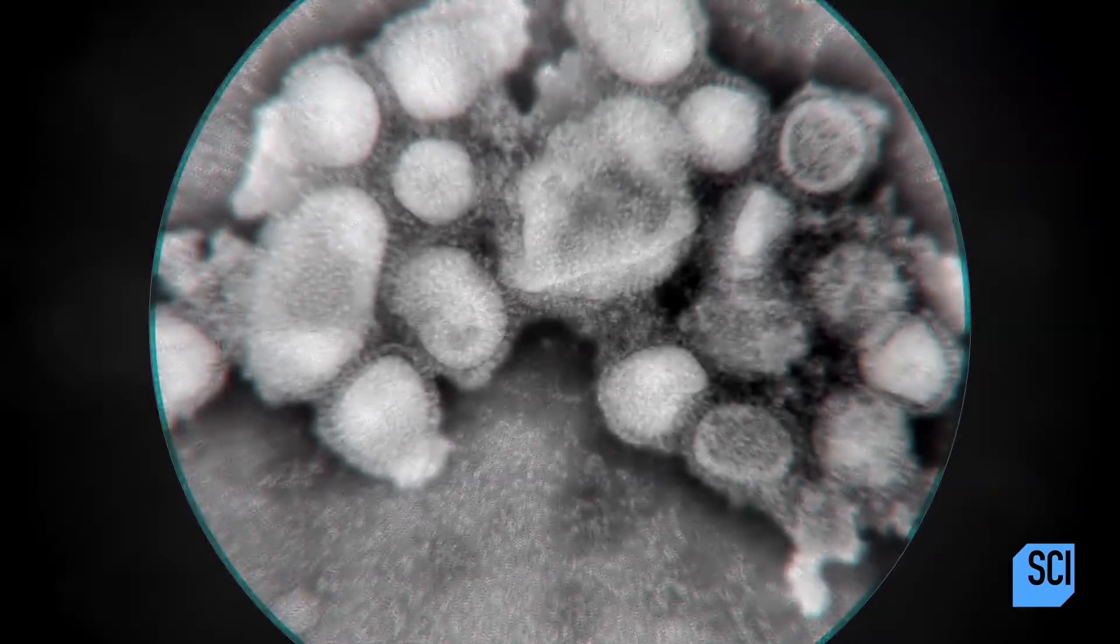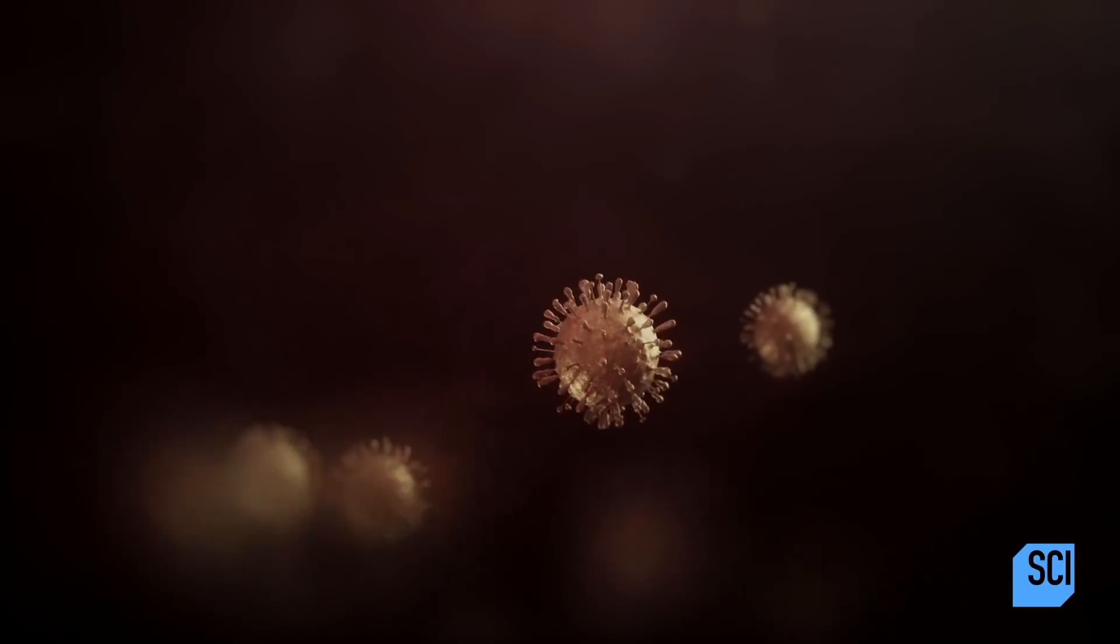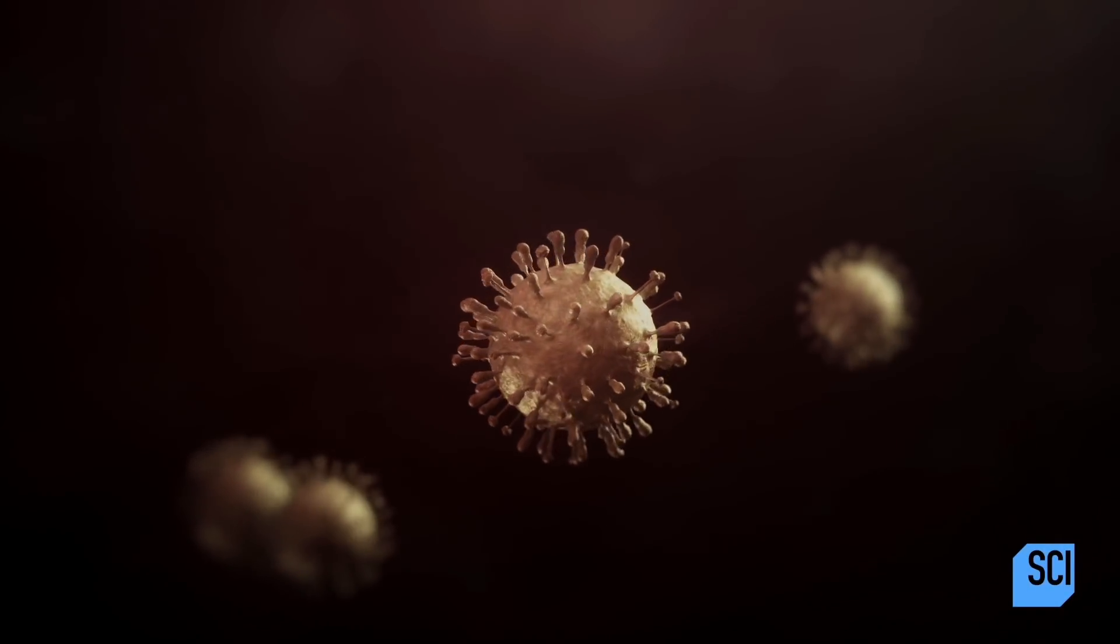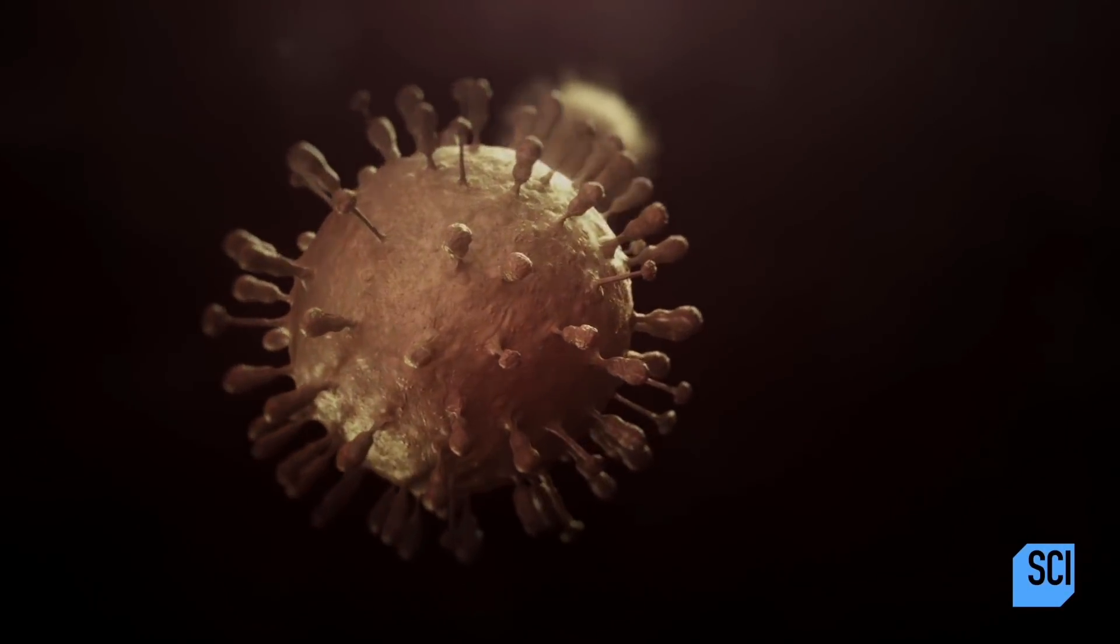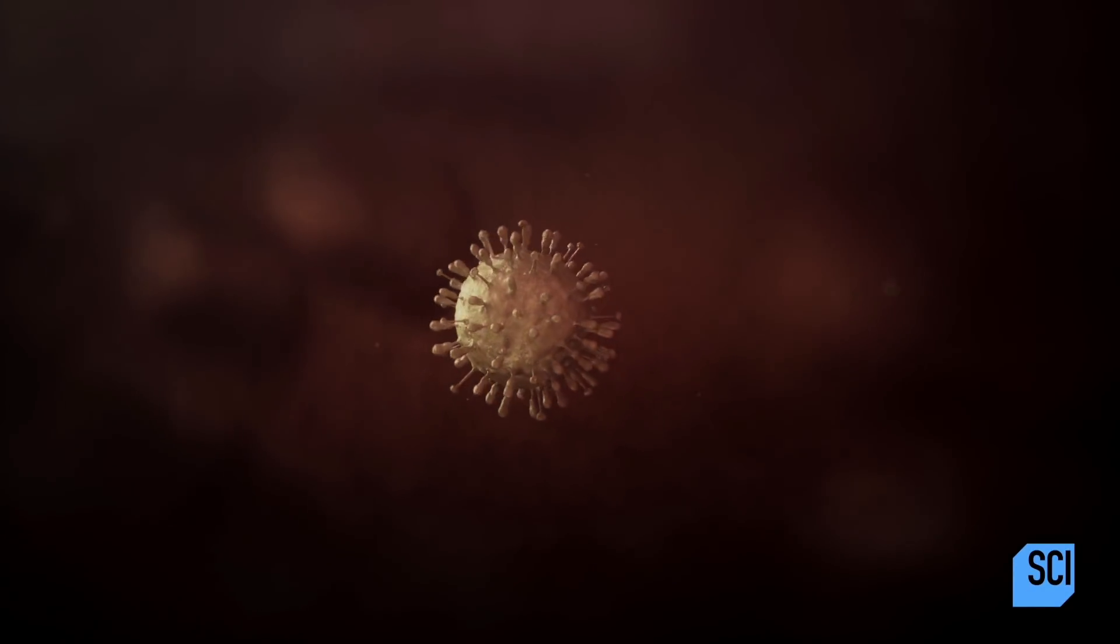Influenza is a microscopic little package that looks kind of like a ball. The virus has two major surface proteins that stick out like spikes. They look, in a sense, like little lollipops, and these are the business end of the virus.